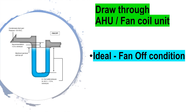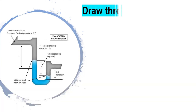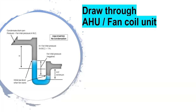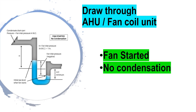At the ideal fan-off condition, both sides of the trap contain the same level of water before the fan starts and condensation begins. Here we look into the U-trap at the fan started condition where condensation has not yet begun.